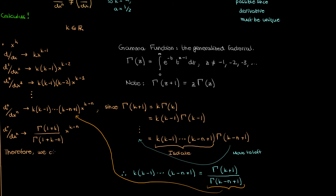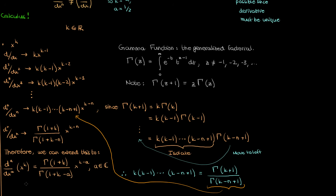In the fractional calculus world, if we replace n by a fractional order a, the ath order fractional derivative of x to the k is given by the same expression with n replaced by a, and x to the k minus n replaced by x to the k minus a. Of course, x and k cannot be negative, and k cannot be a negative integer because that would make gamma of k plus 1 in the numerator undefined.